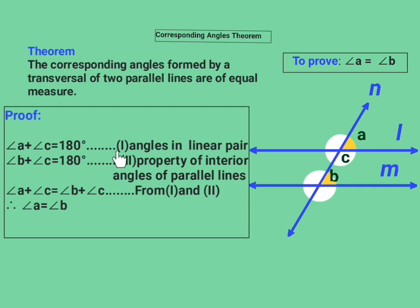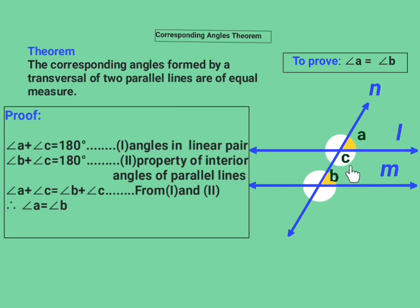Angle A and angle C are a linear pair, so we can say that angle A plus angle C is equal to 180°. This is equation number one, and the reason is: angles in a linear pair sum to 180°. Next, angle B and angle C are both interior angles, so by the property we studied in our previous theorem, interior angles are supplementary.